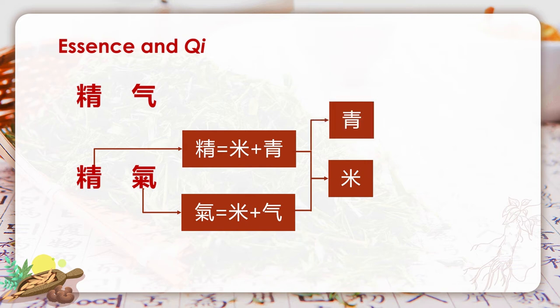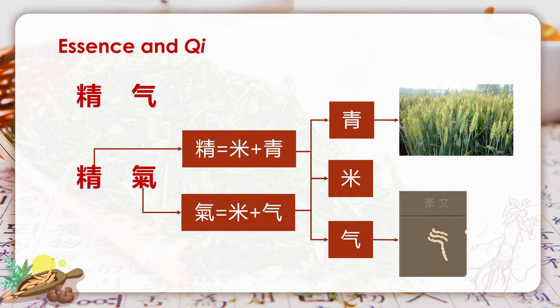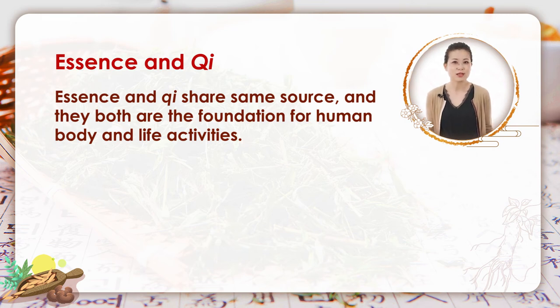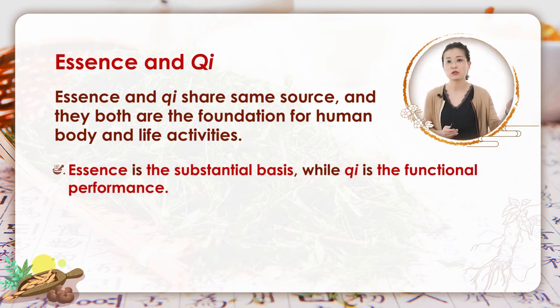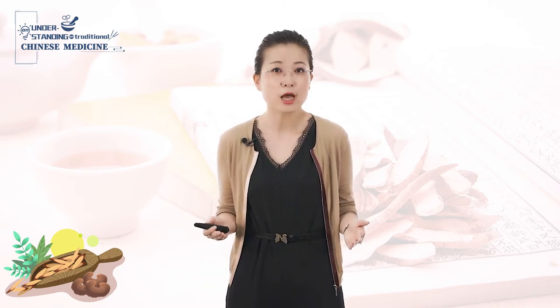The other part of jing is 'qing,' which originally means green and refers to fresh crops of high quality. The other part of qi indicates something moving and floating, as we explained before. So essence and qi share the same source and are both foundational for the human body and life activities. Essence is the substantial basis, while qi is the functional performance. Essence is yin — quiet and formed — while qi is yang — active and formless. In the broad sense, essence refers to the basic substance composing the human body and is the substantial basis for all life activities.